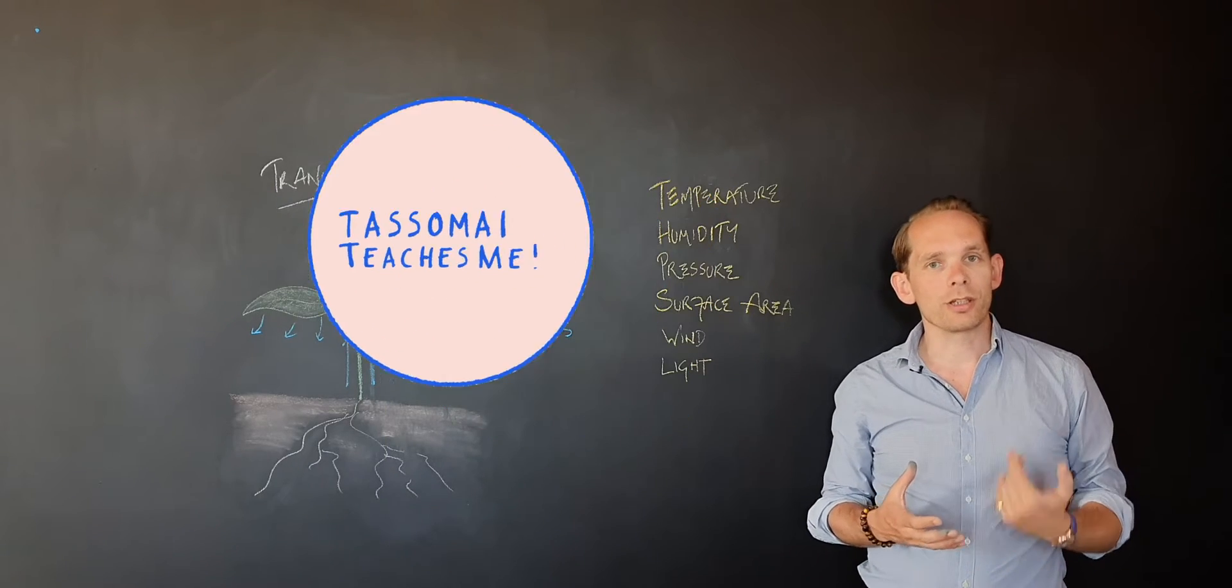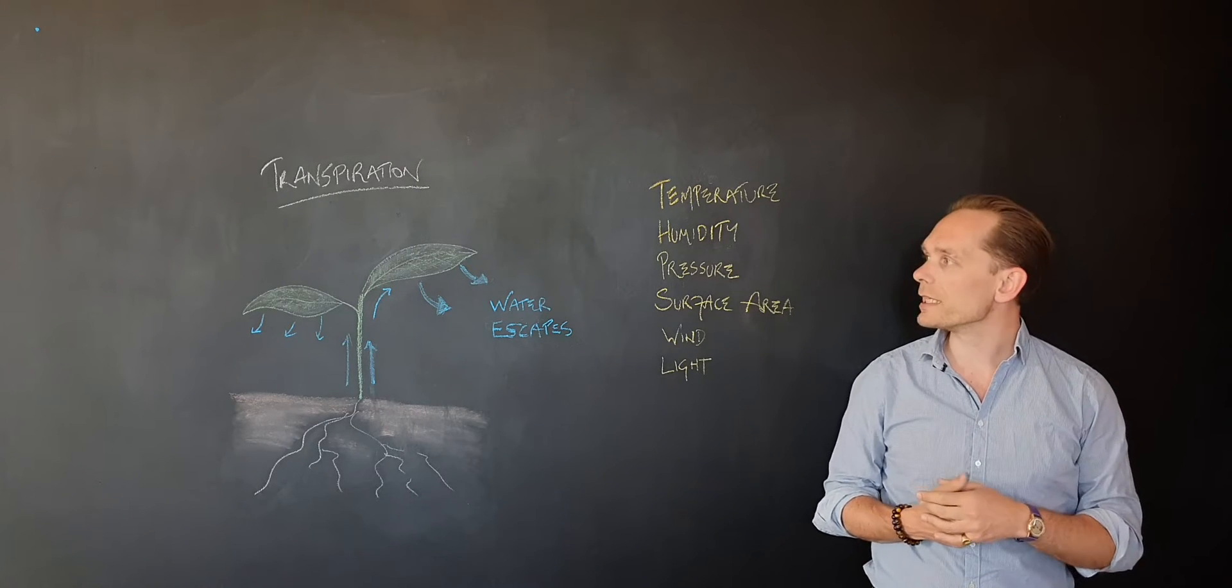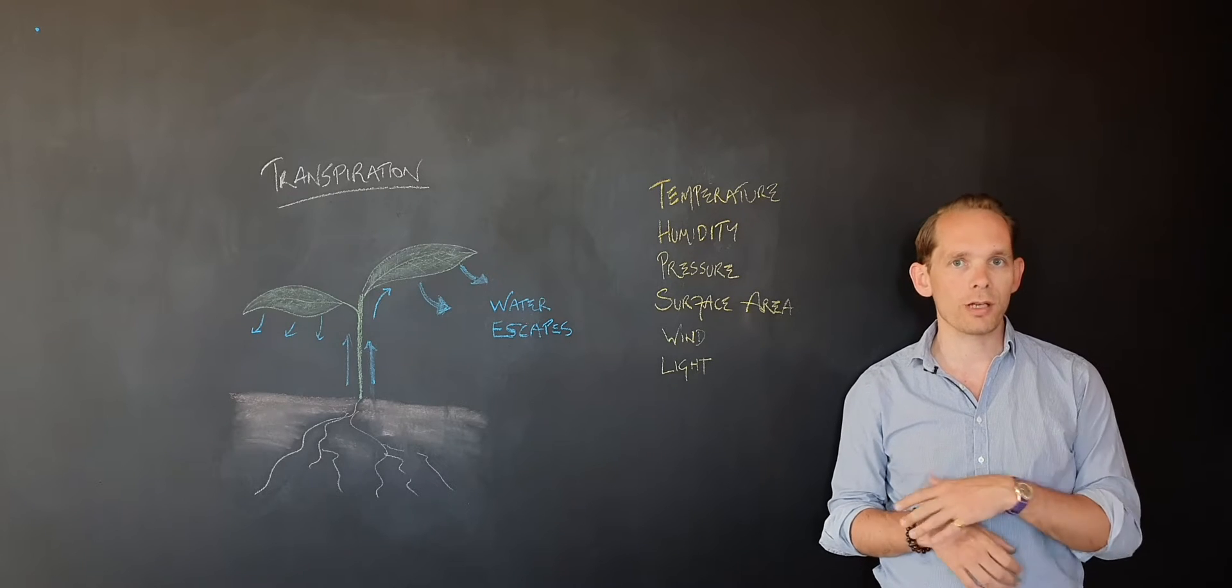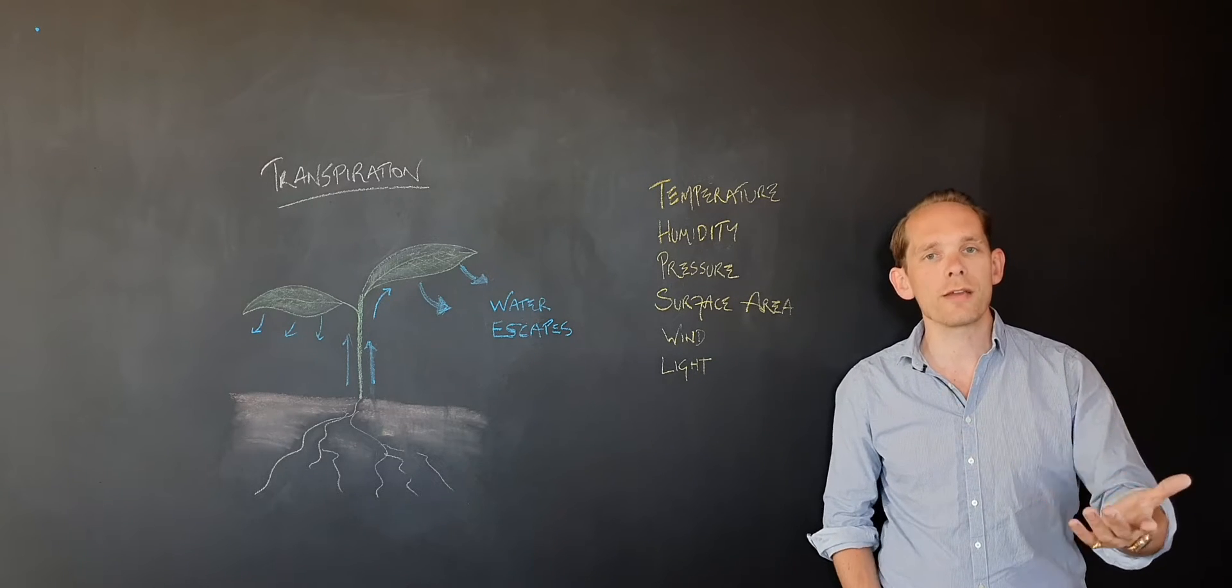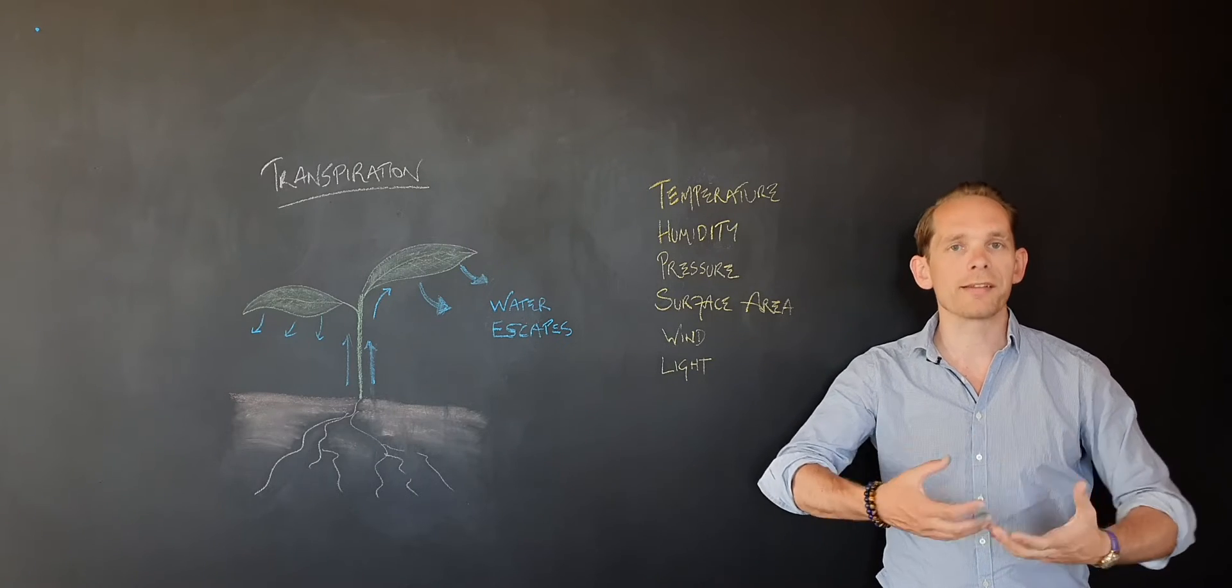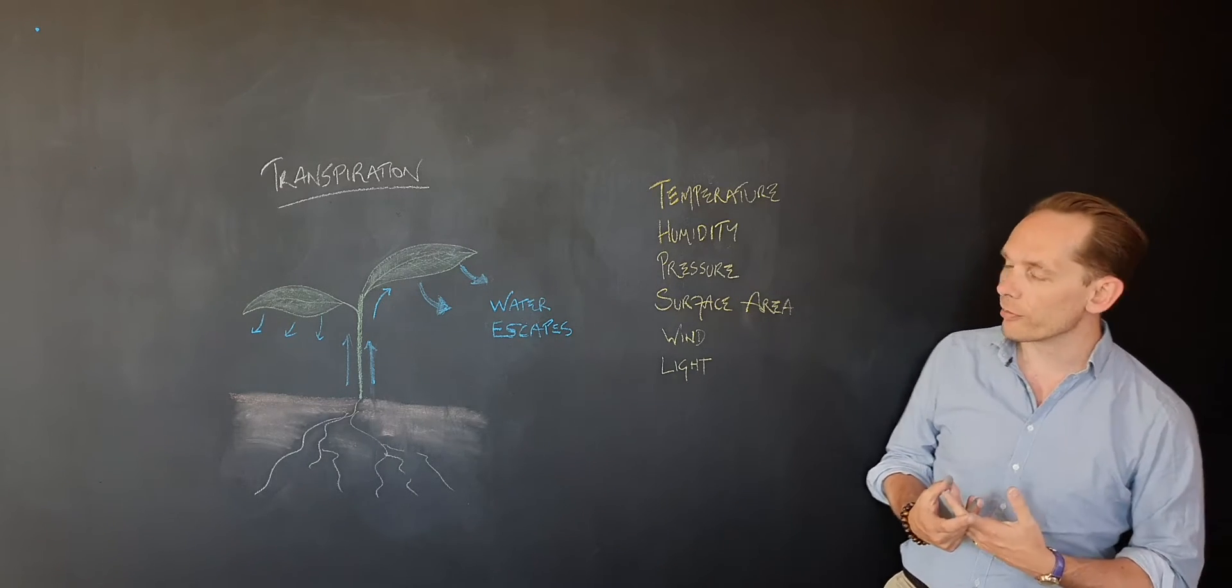This video is about transpiration, and that is the process by which water moves through a plant and is lost through its leaves. So losing water through your leaves is not obviously great news for the plant, but it is also a key driver of the whole transport system, because by losing water it creates a negative pressure that draws more water up through the stem from the roots.